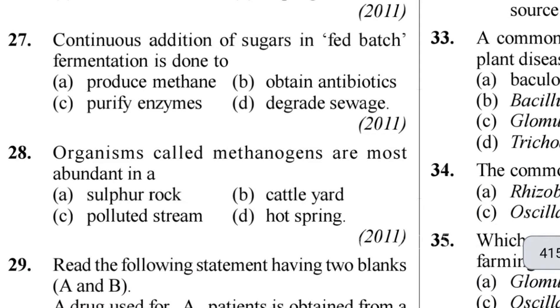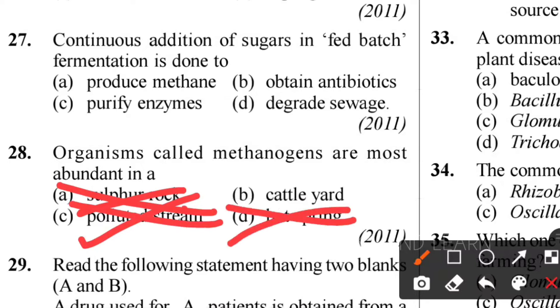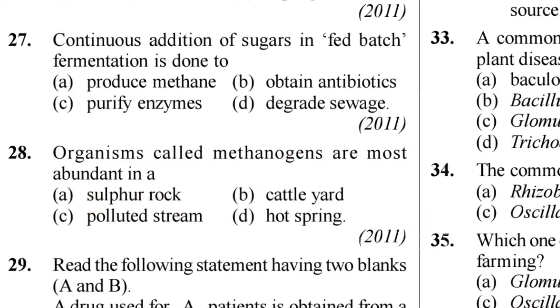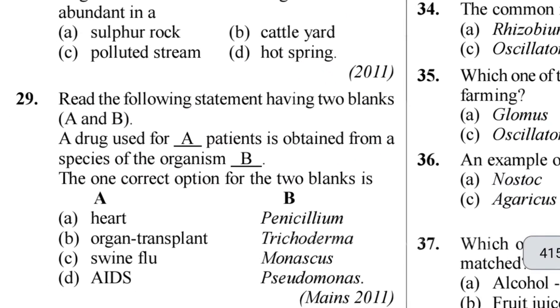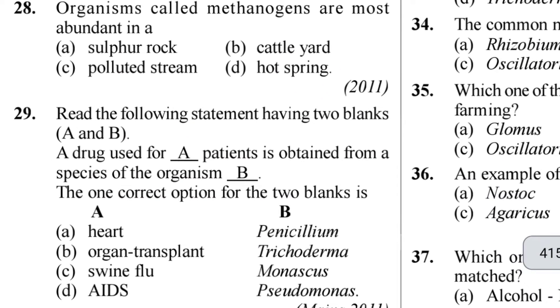Twenty-eighth question: organisms causing methanogens are most abundant in what? Methanogens are not in sulfur rock-polluted streams or hot springs. They are present in the cattle yard. Answer: option A - cattle yard.